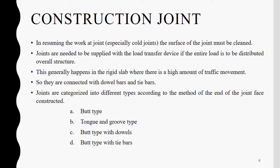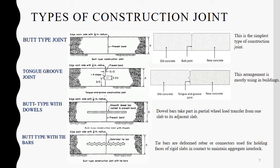These joints are categorized into different types according to the method of joint face construction. That is: butt type joint, tongue and groove type joint, butt type with dowels, and butt type with tie bars. The butt type joint is the simplest type of construction joint. The tongue and groove joint arrangement is mostly used in buildings. Butt type with dowels takes part in partial load transfer from one slab to its adjacent slab. Butt type with tie bars uses deformed rebar or connectors for holding faces of rigid slabs in contact to maintain aggregate interlocking.